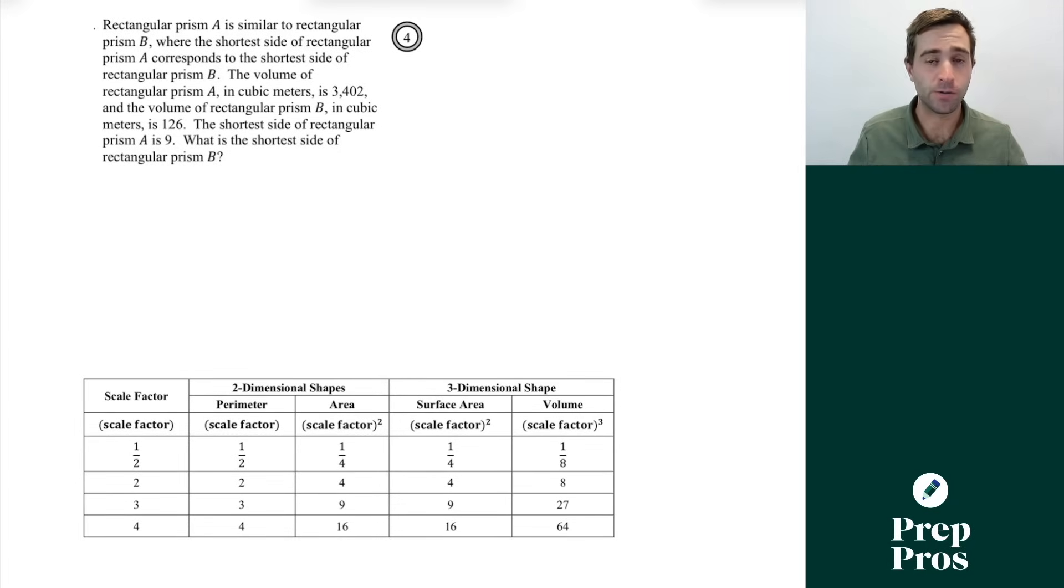Now the next thing you're going to see on your test are scale factor questions. These have been showing up on pretty much every single digital SAT so memorizing this table from my book is really important and helpful for you. So here we see rectangular prism A is similar to rectangular prism B where the shortest side of A corresponds to the shortest side of B. The volume of rectangular prism A in cubic meters is 3,402 and the volume of rectangular prism B in cubic meters is 126. The shortest side of prism A is 9. What is the shortest side of prism B? Well what we need to kind of understand here is we need to figure out that we're dealing with scale factors here and what we also need to recognize is the volume multiple is our scale factor cubed. So really simple example if we had a scale factor of 2 that means the volume of the larger shape would be 8 times greater than the volume of the smaller shape. So what we want to do here is we want to figure out the volume multiple and then we want to take the cube root of that and that will give us our scale factor and that's what we're going to have to use with the 9 to figure out our correct answer. So here if we do 3,402 divided by 126 that's going to give us 27.